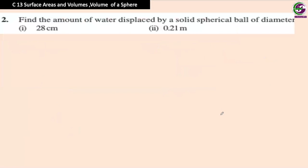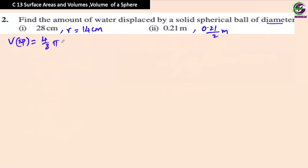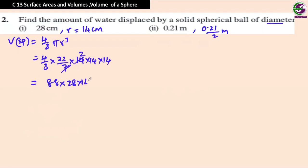Find the amount of water displaced by a solid spherical ball of diameter 14 cm and 0.21 m. Rewrite as radius = 14 cm and 0.21/2 m. Volume of sphere = 4/3 × 22/7 × 14 × 14 × 14, giving 88 × 28 × 14 / 3. With denominator 3 we get the mixed number 11498⅔ cm³.